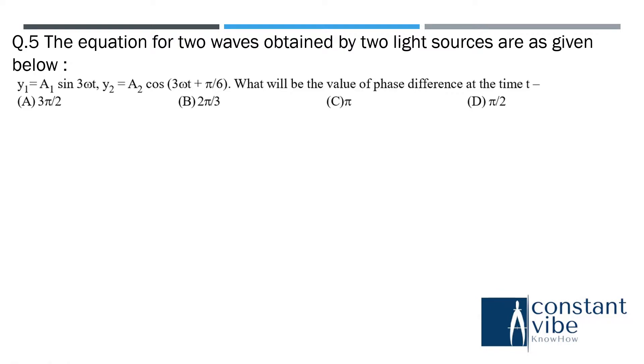Next, fifth question. The equation for two waves obtained by two light sources are as given below: y1 is equal to A1 sin 3 omega t, y2 is equal to A2 cos 3 omega t plus 5 by 6. What will be the value of the phase difference at that time t?